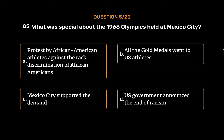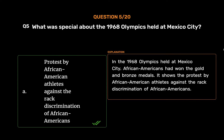The correct answer is Option A: Protest by African American athletes against the racial discrimination of African Americans. In the 1968 Olympics held at Mexico City, African Americans had won the gold and bronze medals, showing the protest by African American athletes against racial discrimination.